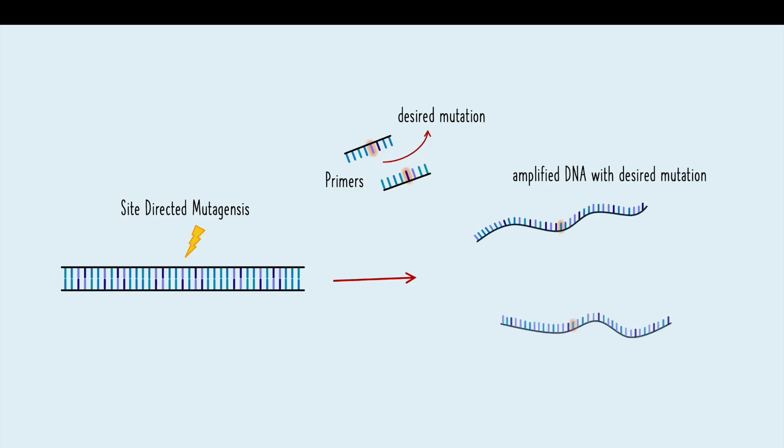Introducing a point mutation by PCR, also known as site-directed mutagenesis, involves designing primers with the desired nucleotide change and using them in a PCR reaction to amplify the target DNA.